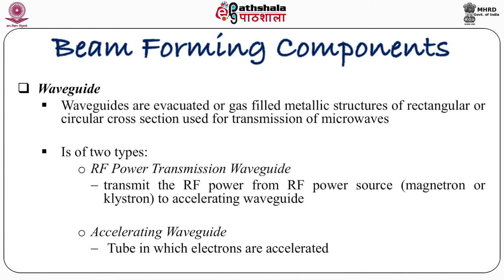The waveguide consists of evacuated or gas-filled metallic structures of rectangular or circular cross-section, used for transmission of microwaves. The waveguide is again of two types: the RF power transmission waveguide, which transmits RF power from the RF power source (magnetron or klystron) to the accelerating waveguide; and the accelerating waveguide, which is the tube in which electrons are accelerated. The RF power and electrons are synchronized, and electrons are injected into the waveguide. The energy of the electron is increased with this wave in the waveguide due to the klystron or magnetron, and achieves its final energy to produce photons or come out as an electron beam from the accelerator.